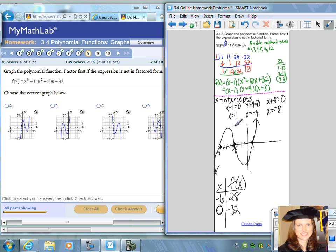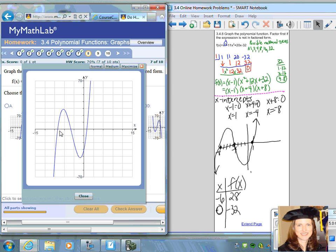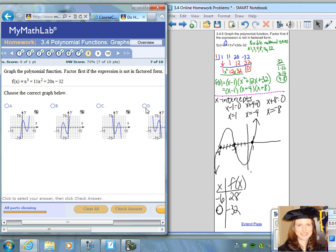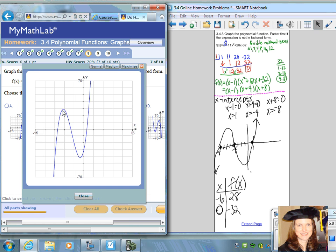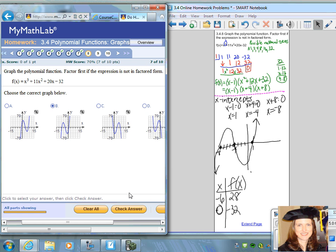We get the general idea that this graph starts low, goes up, crosses through the x-axis at negative 8, comes back down, crosses through at negative 4, goes below the x-axis, comes back up, and crosses through at positive 1, and heads towards positive infinity. It looks like on my graph this could go through negative 4, negative 8, and 1. That does look like the best choice here. Check your answer. Excellent.